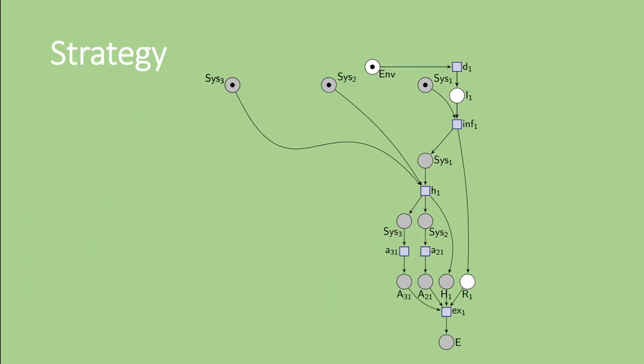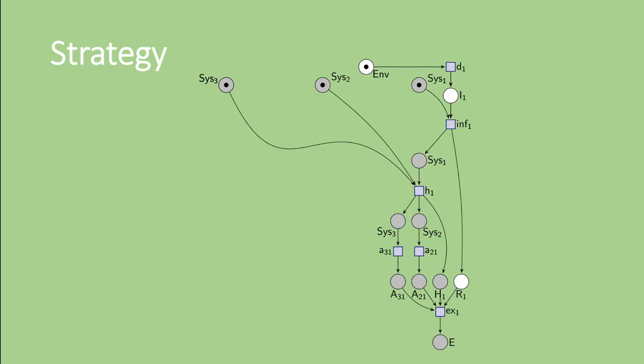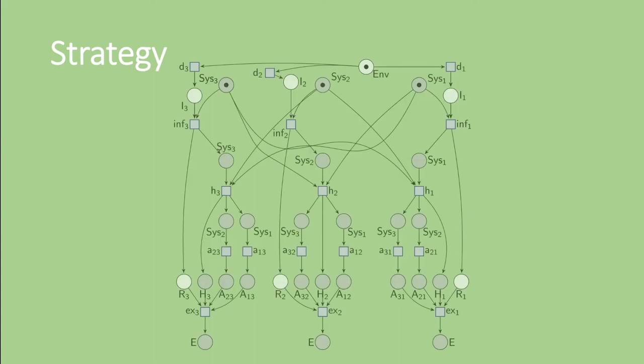Since the system players avoided reaching bad places, they win this play. The other two cases are completely symmetric. This is what we call a winning strategy.